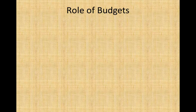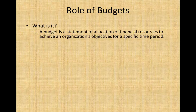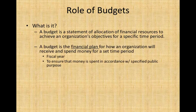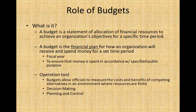Before we get into the Master Budget Process, let's take a quick look at the role of budgets. Budgets are basically financial planning tools that are used to help make better decisions. A budget specifically is a statement of the allocation of financial resources to achieve an organization's objectives for a specific period of time. It is a financial plan, typically covering a fiscal year or fiscal quarter, ensuring that money is spent in accordance with the specified purpose. It is an operational tool used for better decision making, planning, and control.